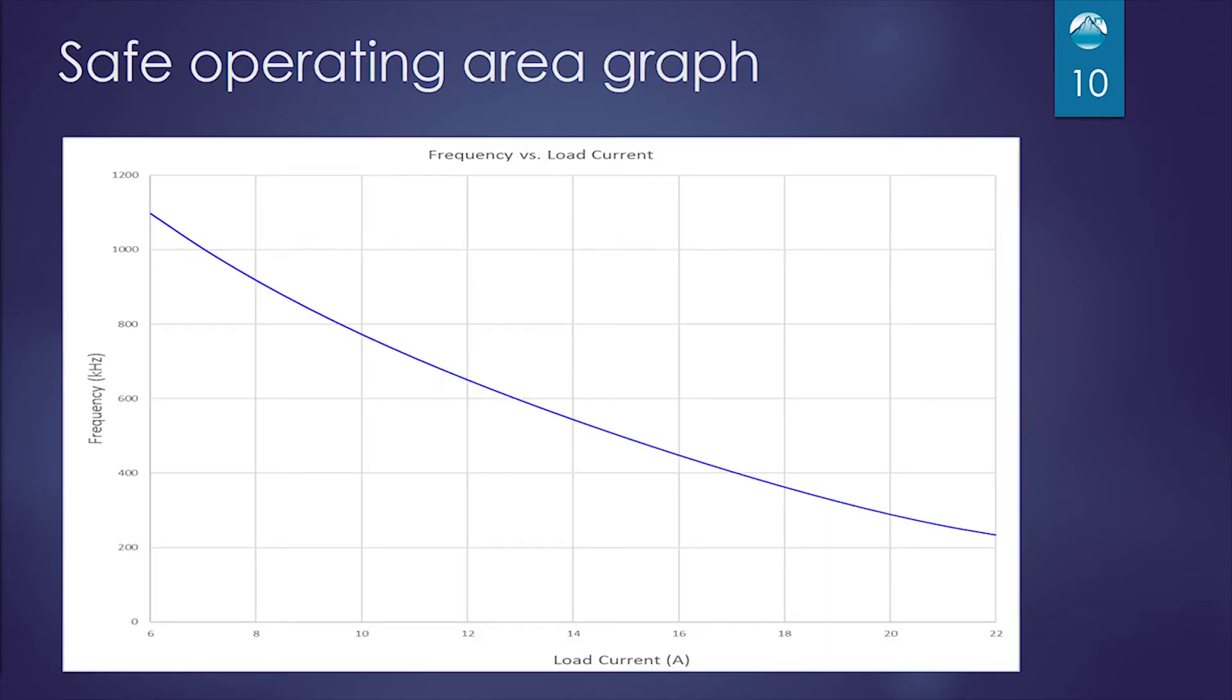Here is a safe operating area graph. So we'll do a quick example. If you look along the x-axis, and let's say we want to drive 20 amps on our laser diode. So you find 20 amps on the x-axis, and you go up until you hit the blue line. Then you go over to the left until you hit the y-axis, and you see that the maximum frequency is right around 300 kilohertz, is the fastest you can operate at 20 amps.